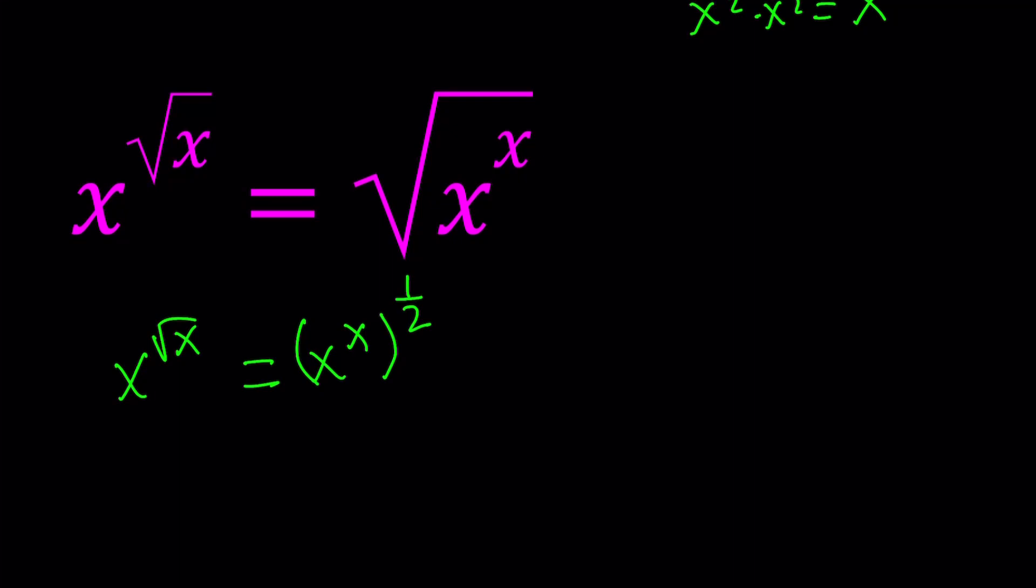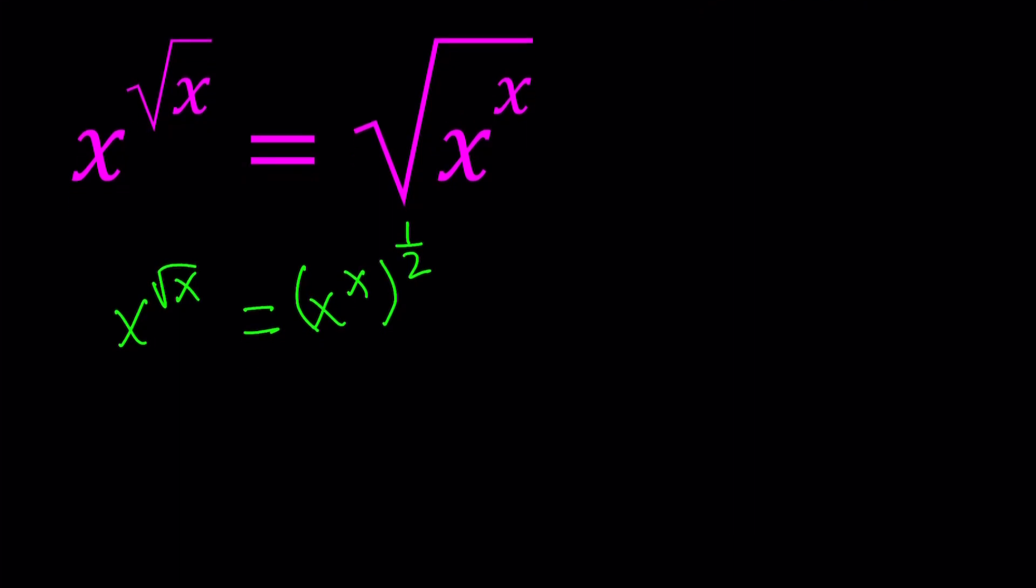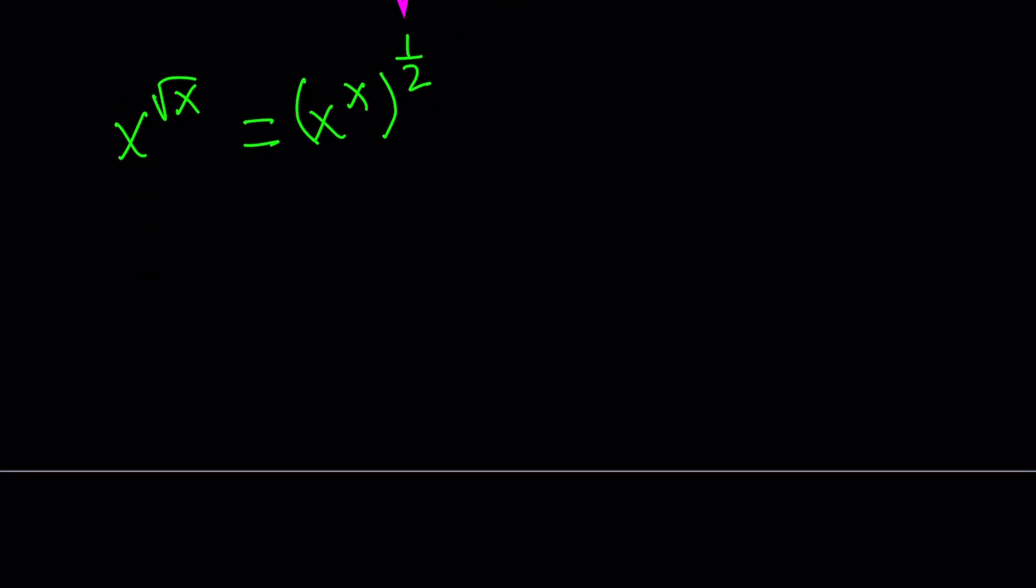Of course, x needs to be positive in this case, otherwise you're dealing with complex numbers. We can multiply powers, which gives us x^√x = x^(x/2).